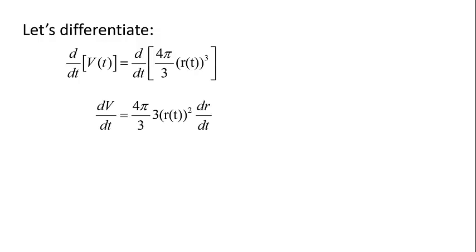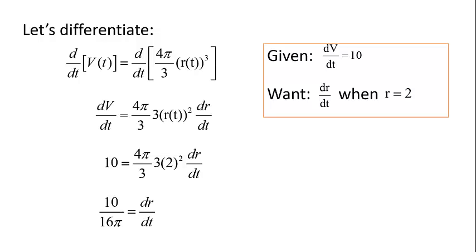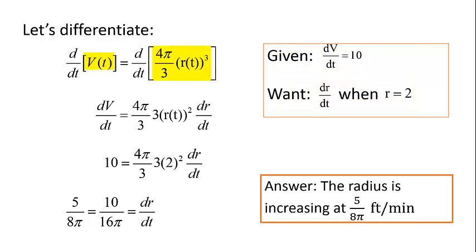Now that we've taken our derivative, we can plug in the information we were given in the problem. Recall, we were given that dv/dt equals 10, and we want dr/dt when r equals 2. So let's plug in dv/dt equals 10 and r equals 2. Finally, we'll solve for dr/dt and see that dr/dt is 10 divided by 16π, or 5 divided by 8π. So our answer is that the radius is increasing at the rate of 5 over 8π feet per minute. We determined what information we were given, found a relationship between our variables, differentiated both sides, plugged in the given information, and solved for the missing rate.